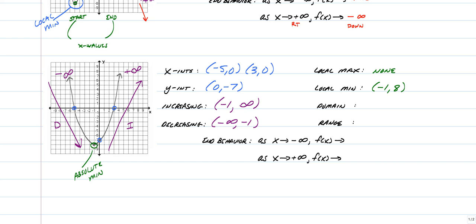End behavior — as you can see, as you go to negative infinity for our x value, what's the graph doing? It's going up. As we go to the right, it's also going up. So that actually means this is an even function, which we'll talk about some other day, but that means it's increasing in both directions. So we have an end behavior of positive infinity for both left and right. Our domain is going to give us x is equal to all real numbers — it goes left forever and right forever because of the arrows.